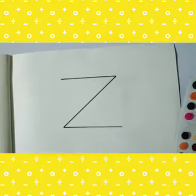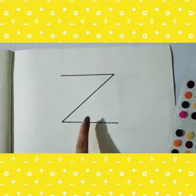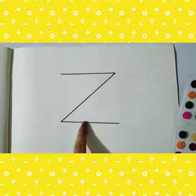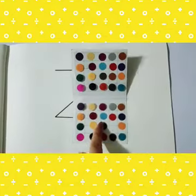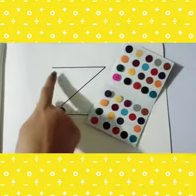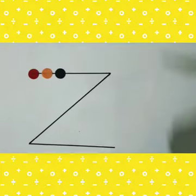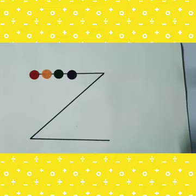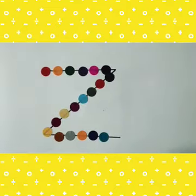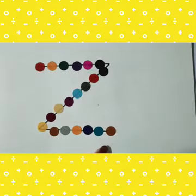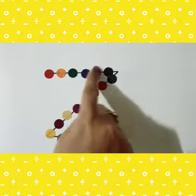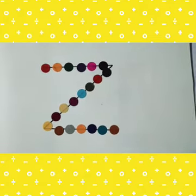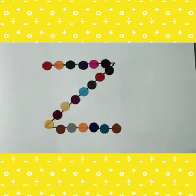Okay, my dear learners, tell me which letter is this? Very good. This is letter Z. Now, we will do the bindi pasting on the letter Z. So, let's start. This is how we will paste bindis. You have to paste all the bindis on the letter Z. And the sound of letter Z is Zzzz.